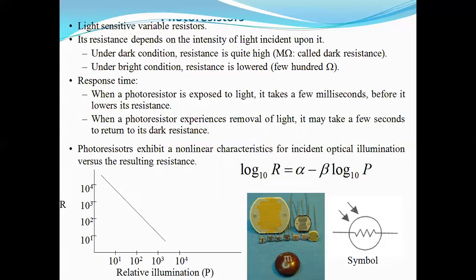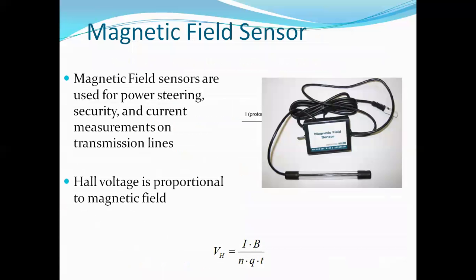These photoresistors exhibits a nonlinear characterizations incident optical illumination versus the graphical representation. And the values that has been obtained they will be plotted on the graph as shown below. And the calculation characterizations will be done with respective power that is log 10 R is equal to alpha minus beta log 10.